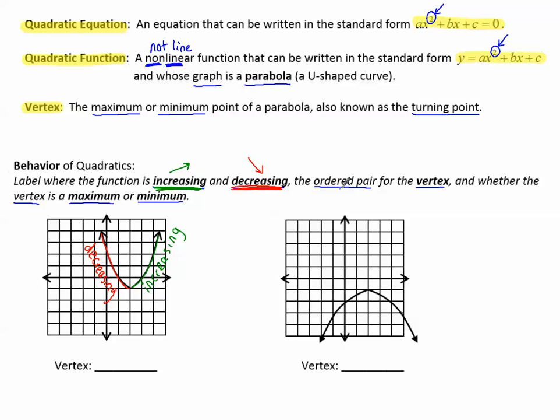Now let's write the ordered pair for the vertex. The vertex is the turning point. Where does the graph change from decreasing to increasing in this graph? That's right here. The ordered pair is the x and the y for that point. From the origin, we count 2 to the right, so that's positive 2, and then 1 down, so negative 1. The vertex is at 2, negative 1. Now is that vertex a maximum or a minimum? Is it a high point of the graph or a low point of the graph? This one's a low point, so this one is a minimum.